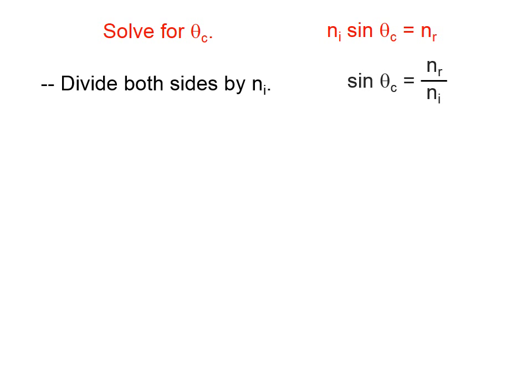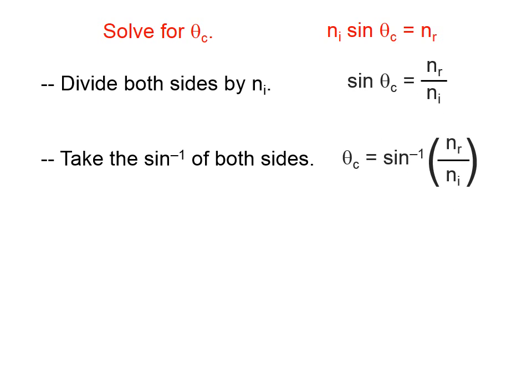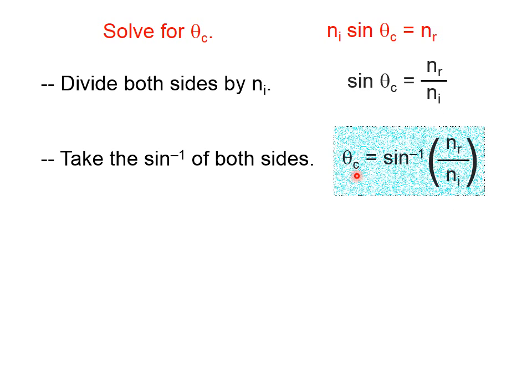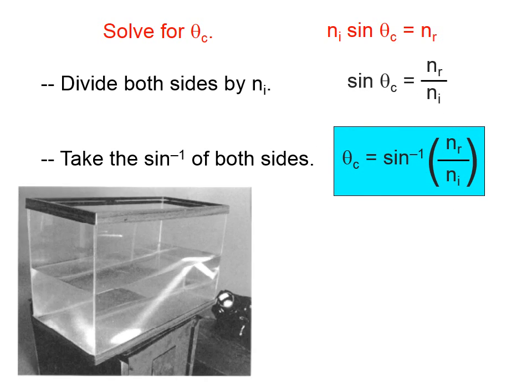We need to get not the sine of theta sub c, but just theta sub c. So, we need to get rid of this sine. And the way you do that is by taking the inverse sine of both sides. When you take the inverse sine of both sides, you get theta sub c is equal to the inverse sine of the quantity nr over n i.